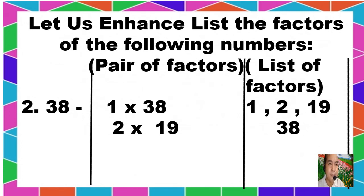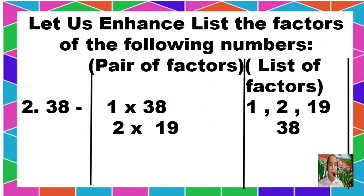Another number from your assessment is 38. What are the pair of factors for 38? We have 1 times 38 and 2 times 19. These are the two pairs of factors of 38 — two numbers being multiplied that will give us a product of 38. What are the list of factors for 38? We have 1, 2, 19, and 38. These are the list of factors for 38.